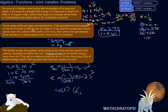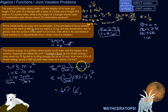Decent amount of kinetic energy — not tons — less than I would have if I was hurling through the air at 10 meters per second. So there's some practice on joint variation problems. If something varies jointly as something and then another something — alright, good luck.